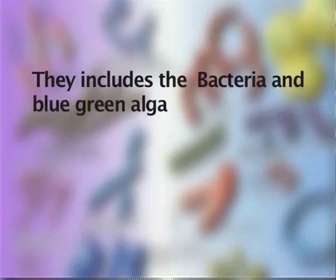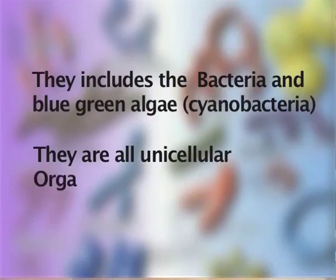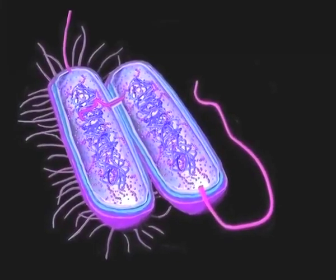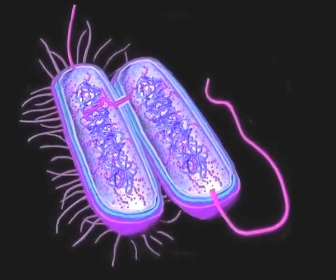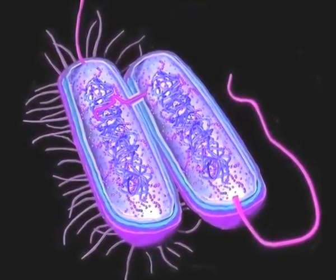The blue-green algae are now known as cyanobacteria. They are all unicellular, that is, single-celled organisms. So the moment we say prokaryotic unicellular organism, it should immediately bring to mind that we are talking about bacteria and cyanobacteria — that is, we are talking about Kingdom Monera and eubacteria.